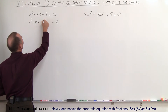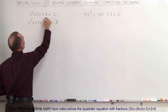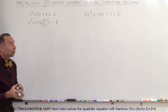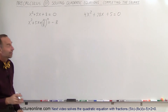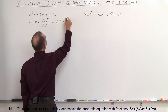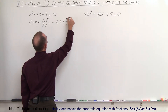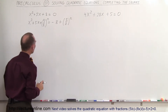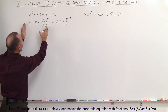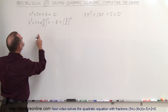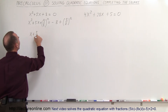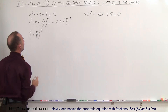So this is plus (5/2)², half the coefficient of the middle term, squared. Of course, if we do that to the left side of the equation, we must do exactly the same to the right side — so plus (5/2)². On the left side we now have a complete perfect square.